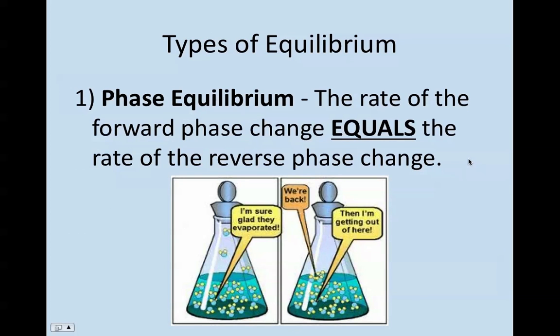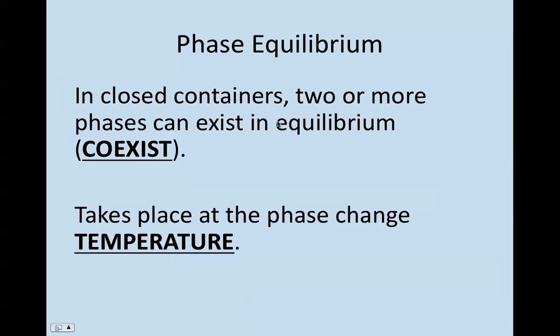So here are our three types of equilibrium that you need to be aware of. The first one is a phase equilibrium. The rates of the forward phase change have to equal the rate of the reverse phase change. This must be in a closed container, and there's two or more phases that can coexist at this equilibrium. And this is important. It always takes place at the phase change temperature.